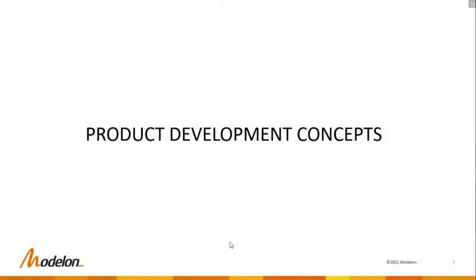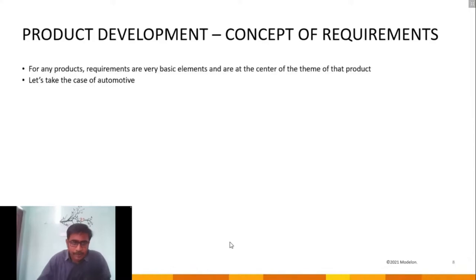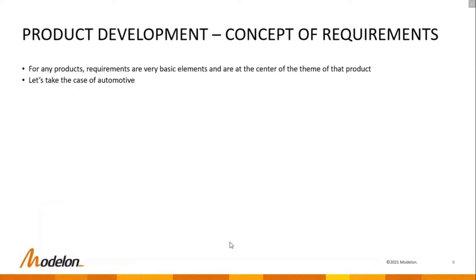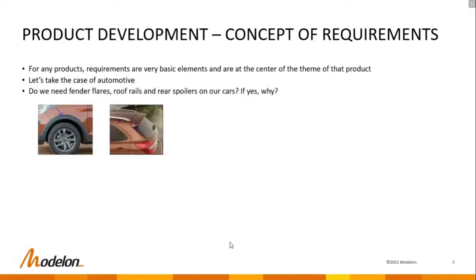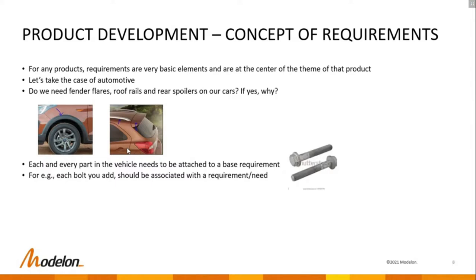Let's jump into product development concepts, starting with requirements. For any product, requirements are the very basic elements and are at the center of the product's design theme. Since my background is mostly in the automotive industry, I'll use use cases from there. For example, fender flaps, roof rails and rear spoilers — each part in the vehicle needs to be attached to a base requirement. Each bolt you add should be associated with a requirement or need.